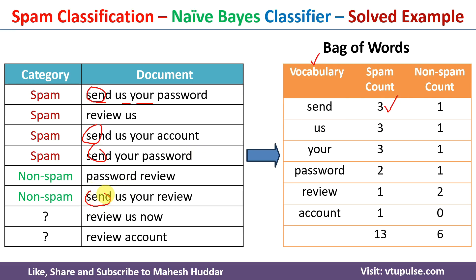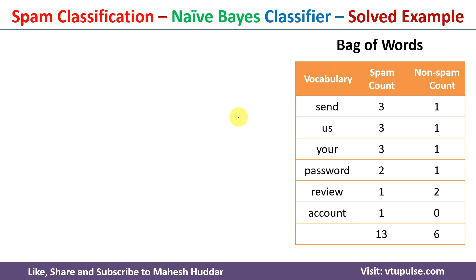Similarly, the word 'your' appears three times in spam and one time in non-spam. We perform this same counting operation for all possible unique words. Finally, we count the total number of words in the spam class and the total number of words in the non-spam class, which we will need for computing conditional probabilities.